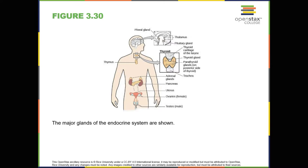Also, hormones are slower to take effect and tend to be longer-lasting. Hormones are involved in regulating all sorts of bodily functions, and they're ultimately controlled through interactions between the hypothalamus in the central nervous system and the pituitary gland in the endocrine system. Imbalances in hormones are related to a number of disorders. This section explores some of the major glands that make up the endocrine system and the hormones secreted by these glands.